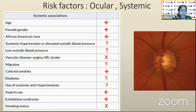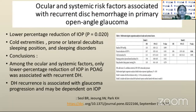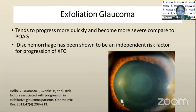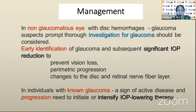There are systemic associations that could be linked to disc hemorrhage. A study on ocular and systemic associations leading to recurrent disc hemorrhage in primary open-angle glaucoma found that lower percentage reduction of IOP from baseline could be one ocular risk factor. Cold extremities, lateral or prone sleeping position, or sleep apnea could also be risk factors for recurrence. Exfoliation needs special mention — disc hemorrhage is seen as an independent risk factor for progression in pseudoexfoliation glaucoma.